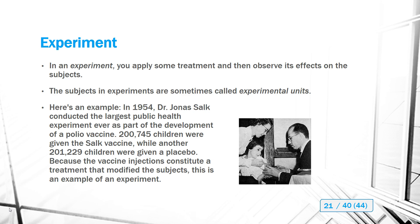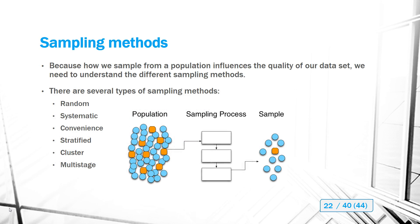Statisticians sometimes call the subjects of experiments 'experimental units,' which sounds a bit odd when talking about people. Either way, whether you're conducting an observational study or an experiment, you still have to consider how you're sampling your population, because that greatly influences the quality of your data set and in turn the quality of your conclusions.